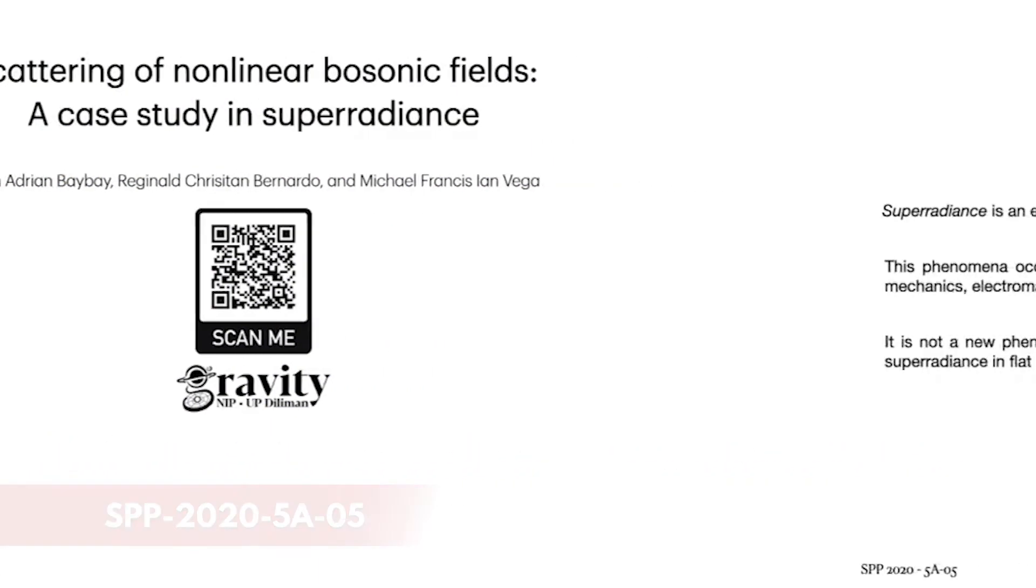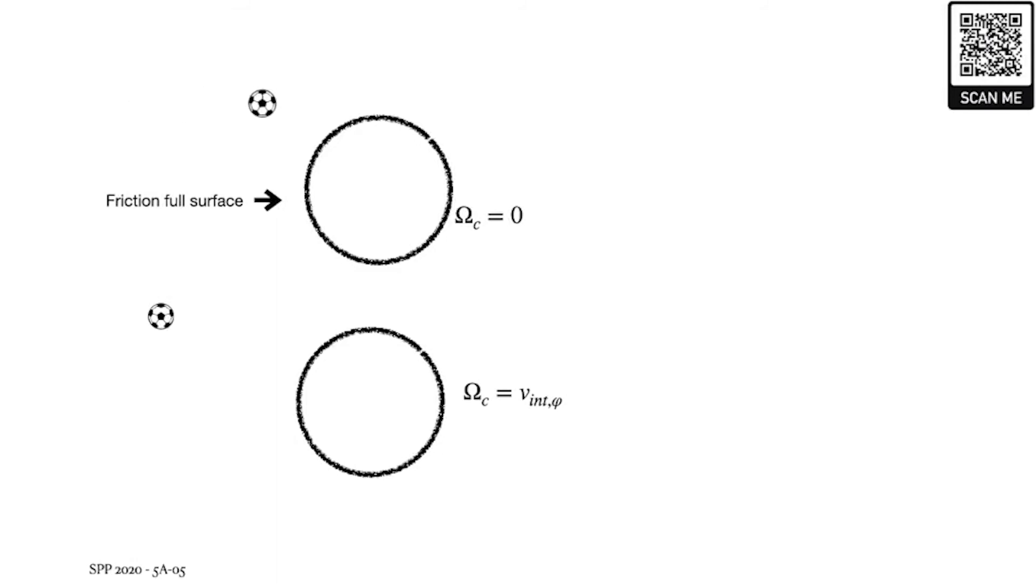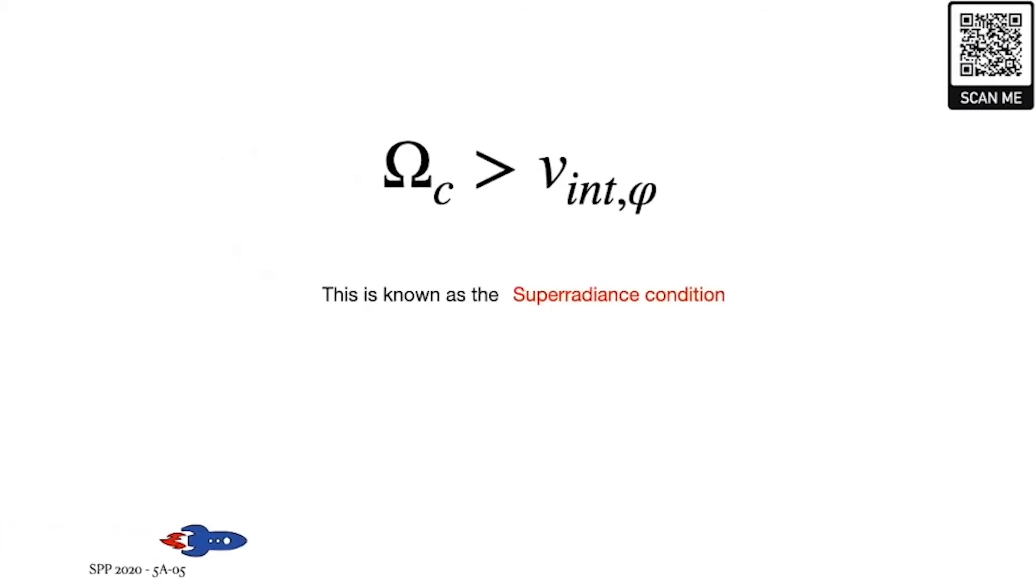Superradiance is a radiation enhancement process wherein objects can get energy away from dissipative systems. As a kinematic example, let us consider a ball coming in contact with a friction-full surface. Notice that when the cylinder is not spinning or if it's spinning with the same velocity of the ball, then we end up in a state where the ball's final velocity is less than or equal to its initial velocity respectively. However, something interesting happens when we let the cylinder spin faster than the ball. We actually get a scenario where the ball will get a kick from the friction of the cylinder when this condition is satisfied. This is known as the superradiance condition.